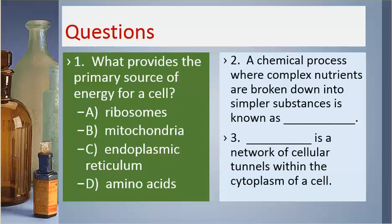Number one. What provides the primary source of energy for a cell? A. Ribosomes. B. Mitochondria. C. Endoplasmic reticulum. D. Amino acids.